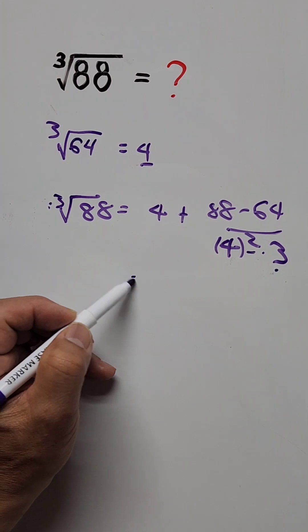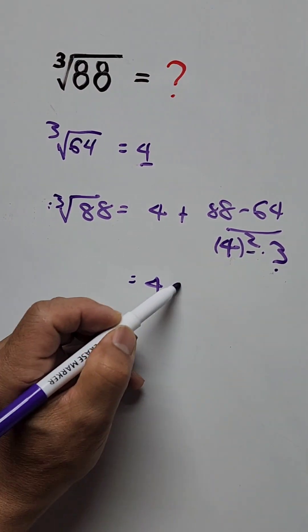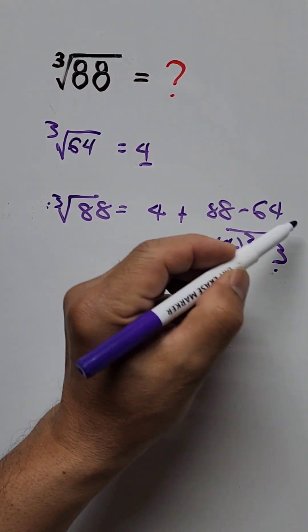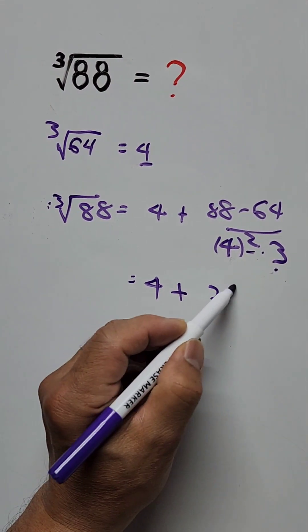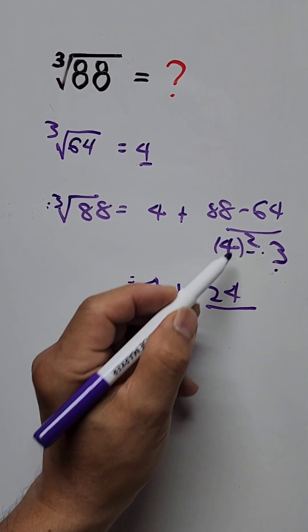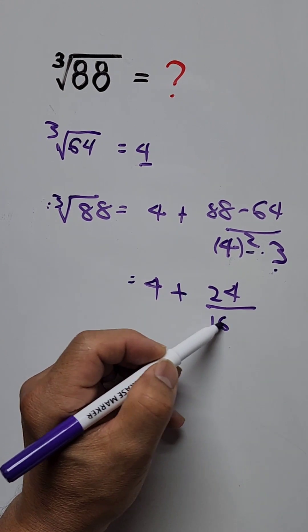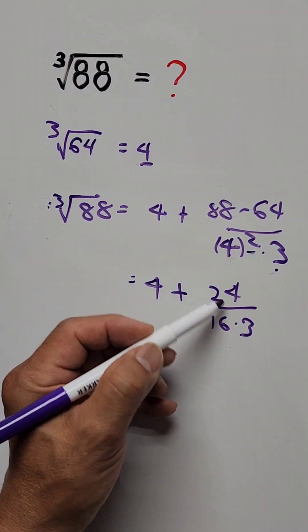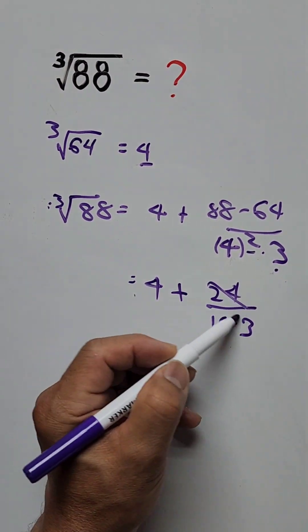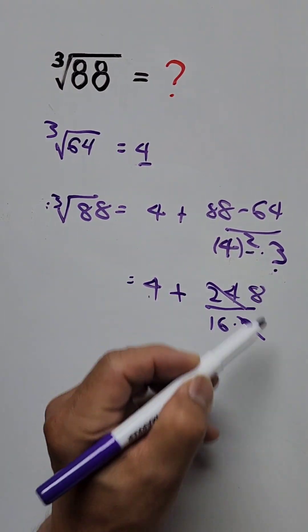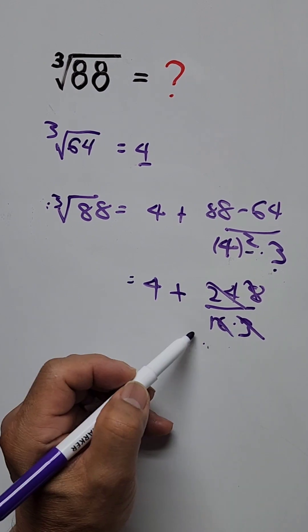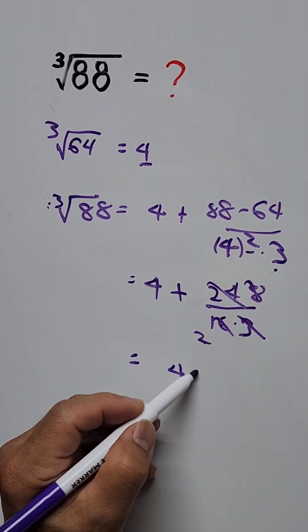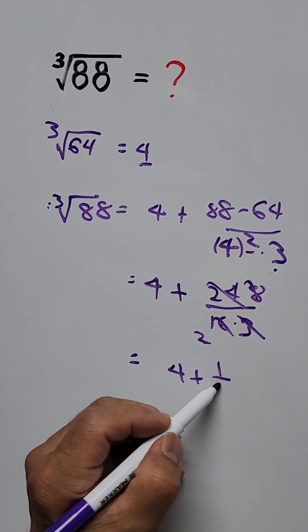So the fraction is equal to 4 plus 88 minus 64, which is 24, divided by 16 times 3. Now 24 divided by 3 is 8, and 8 divided by 16 is one half, giving us 4 plus one half.